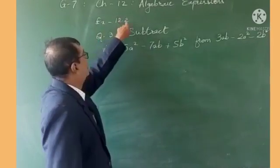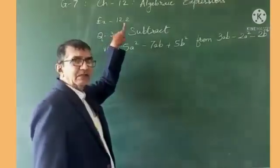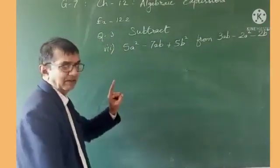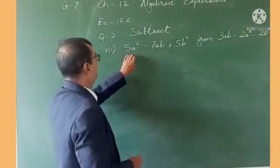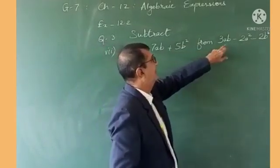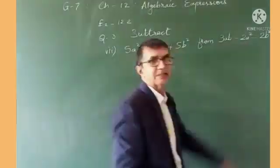We are doing exercise 12.2, which is a subtraction chart, and we randomly picked problem number 7. It says that 5a² - 7ab + 5b², we have to subtract from 3ab - 2a² - 2b².